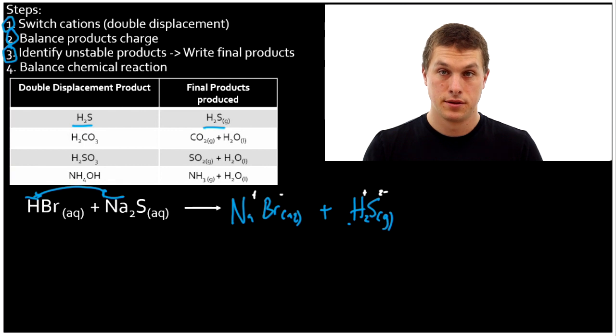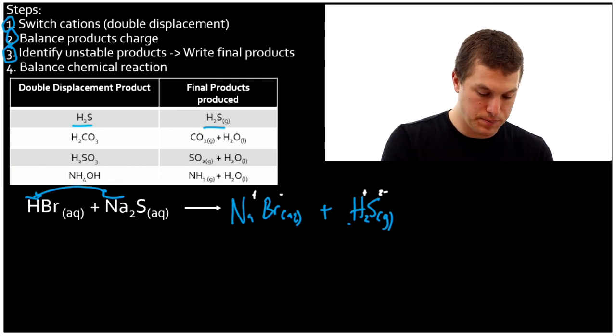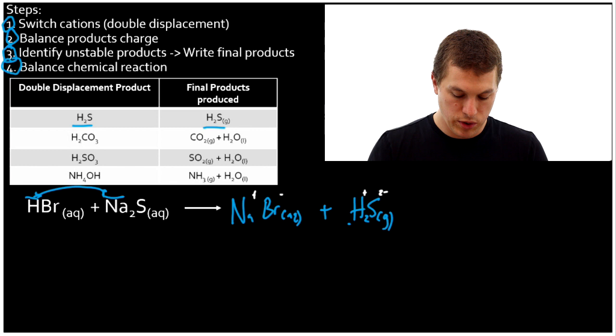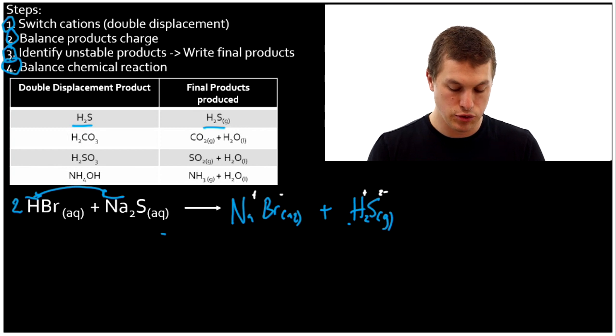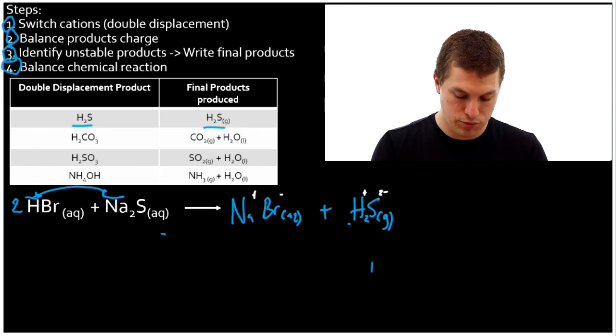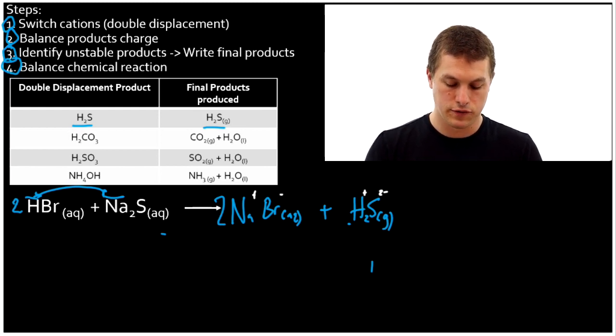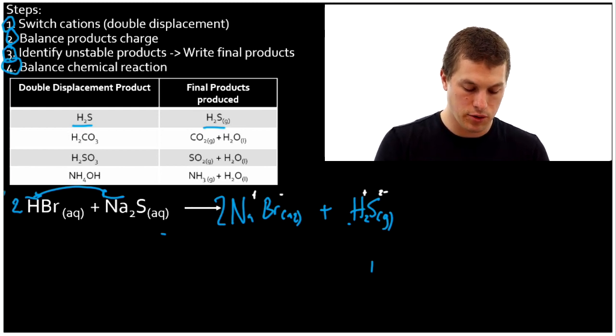And so step four says balance our chemical reaction. Well, what we need to do is we need to make sure that there's two hydrogens on the left side. So that makes it two hydrogens on the left side. And that's going to now give us two bromines. So we need to make sure there's two bromines over here. Notice that we have two sodiums on both sides and one sulfur on both sides. So that's our final chemical reaction.